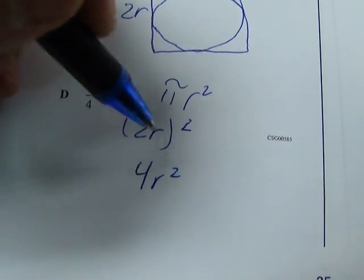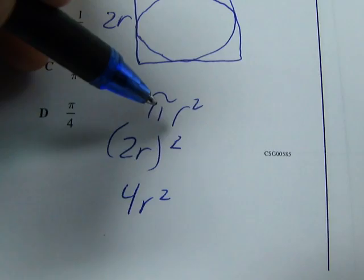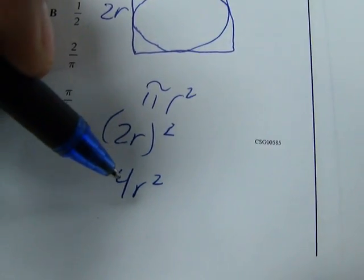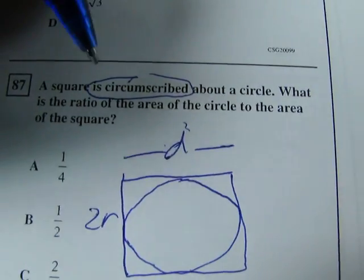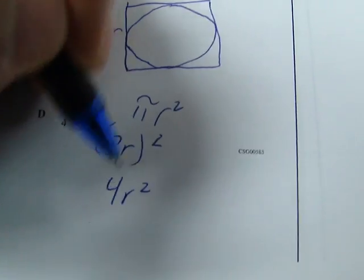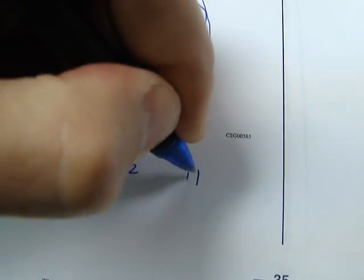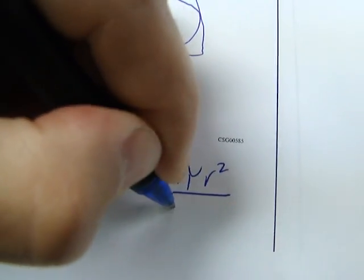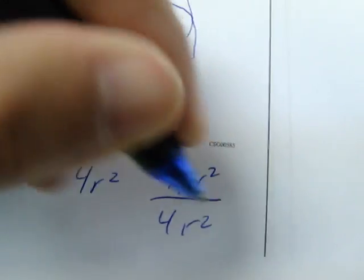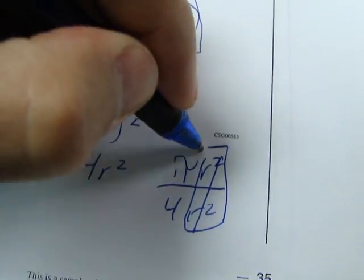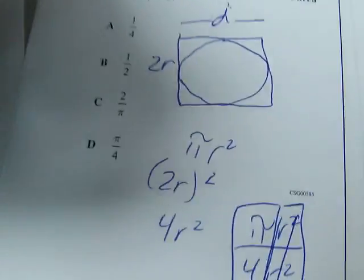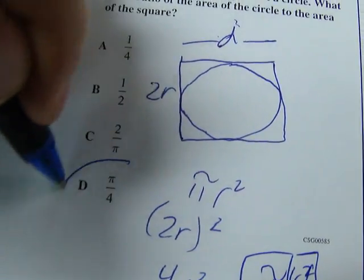Does that make sense? So the circle is pi r squared, and the square is 4r squared. So it says, what is the ratio of the area of the circle to the area of the square? Well, the ratio of this to this, pi r squared over 4r squared. Let me just cancel this part out, and what do you get? Pi over 4. There it is, D.